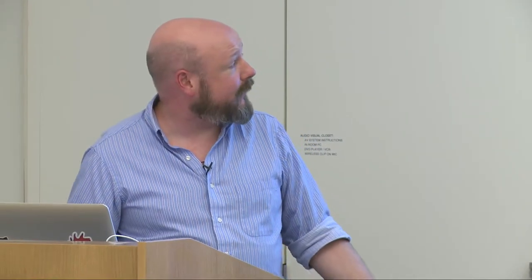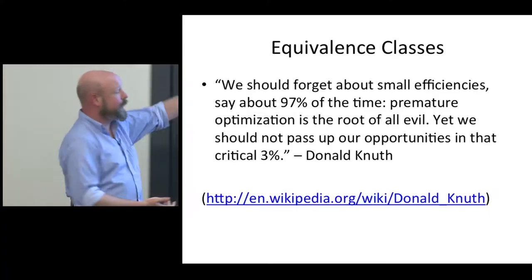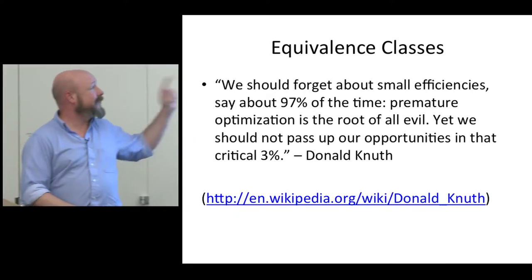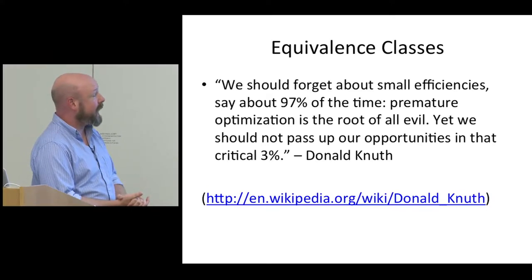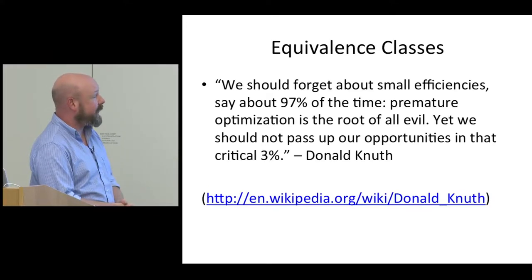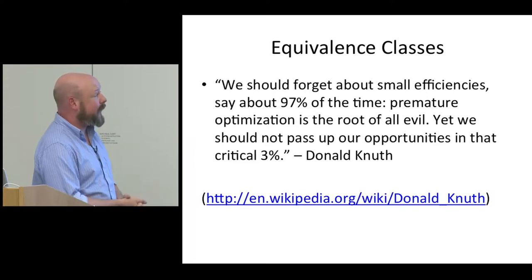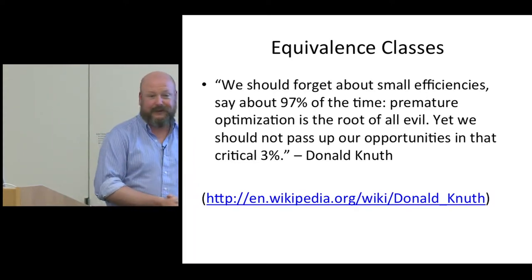One thing to keep in mind is this quote from Donald Knuth. He said: we should forget about small efficiencies, say about 97% of the time — premature optimization is the root of all evil. Yet we should not pass up our opportunities in that critical 3%. Certainly we want to squeeze out every last bit of memory, but that should not be your first goal. Your first goal should be getting things basically working, and if things are particularly slow, then it's time to start thinking about optimization.